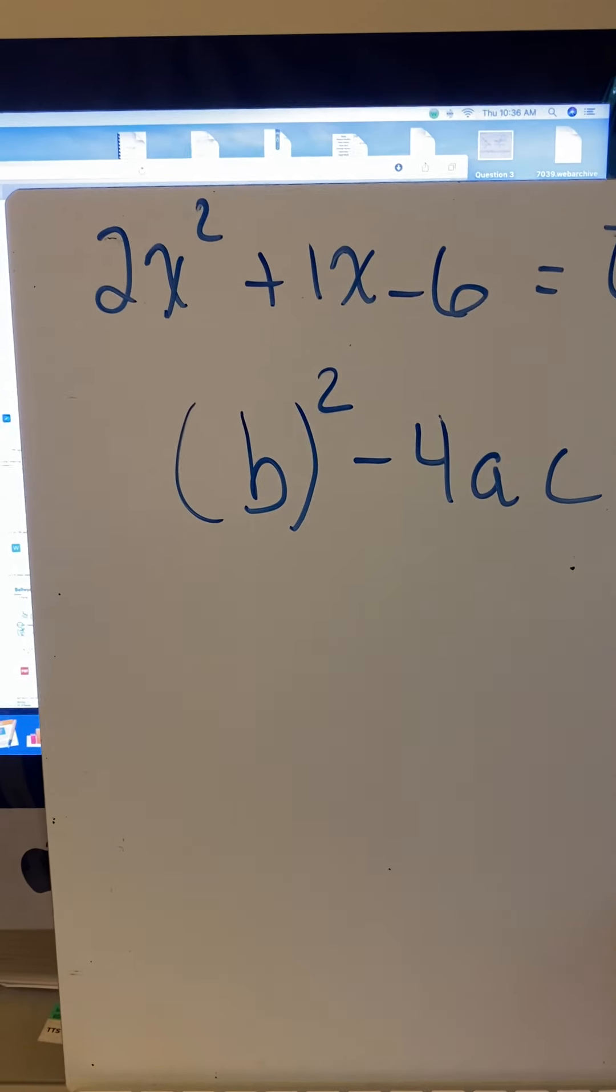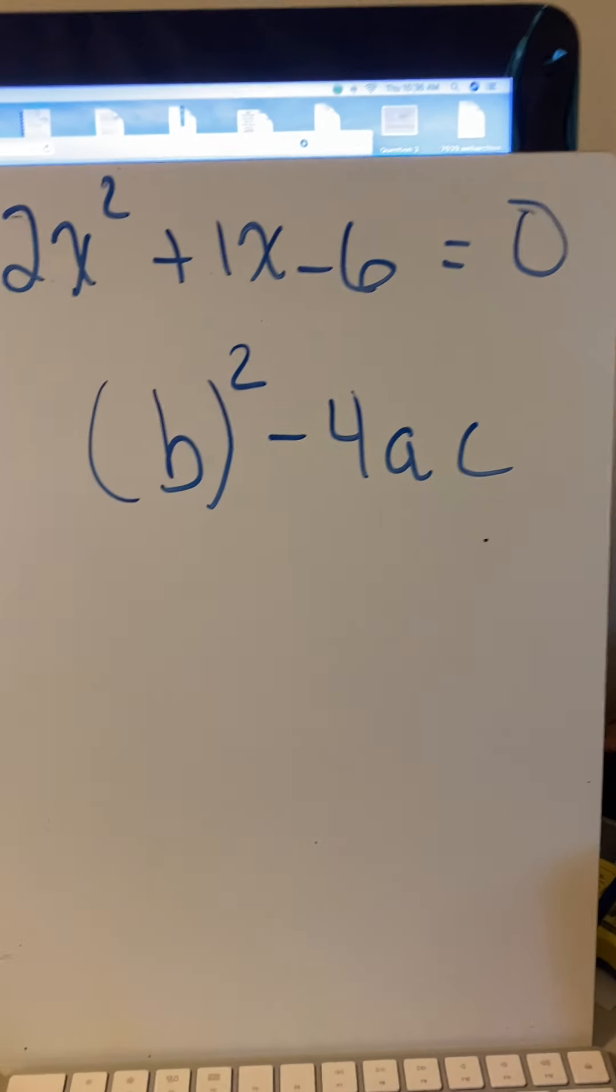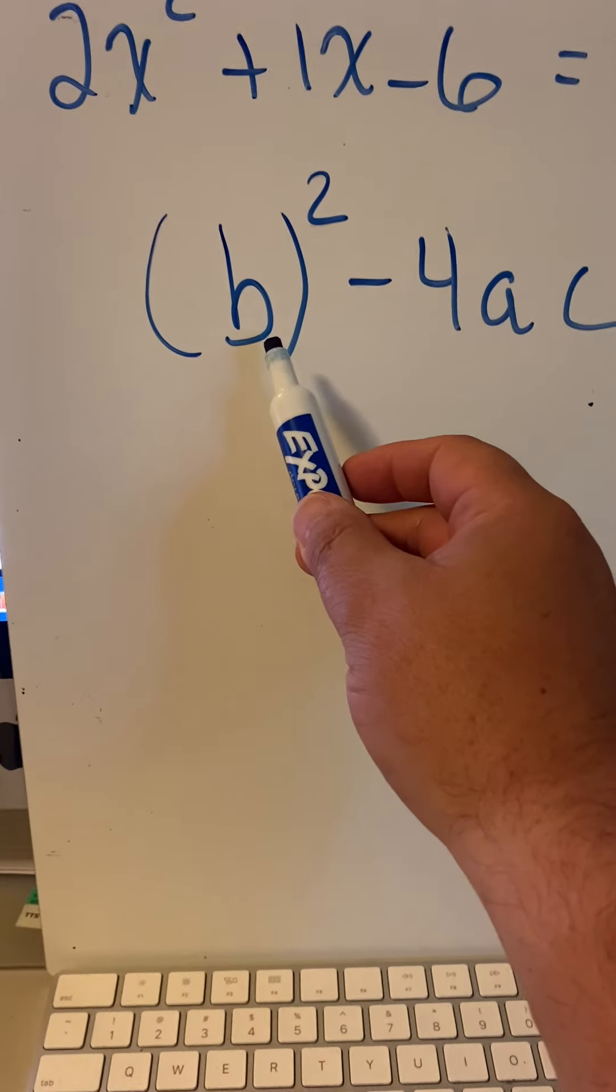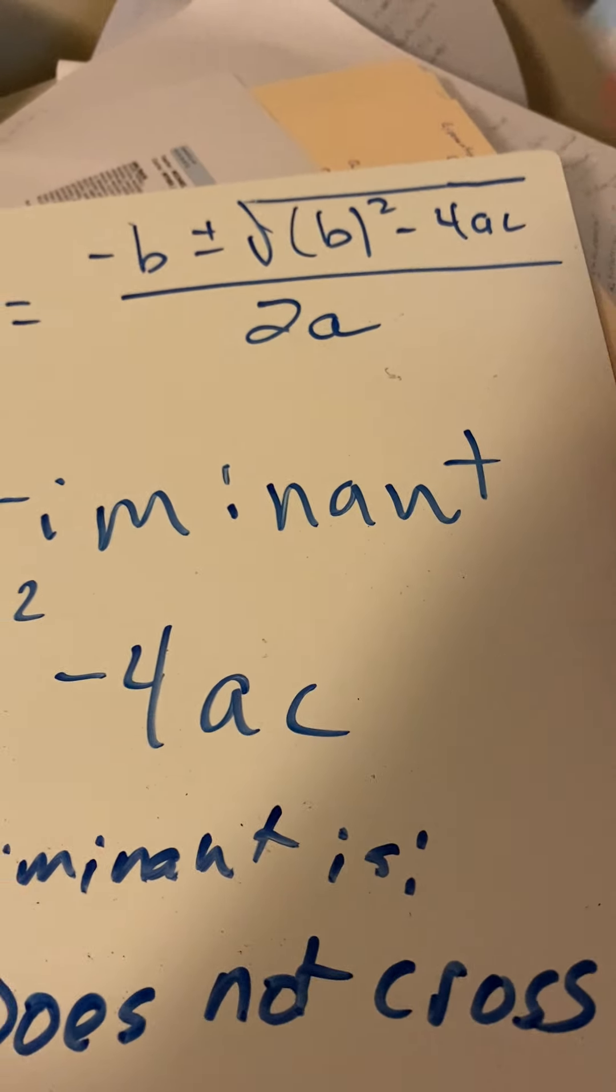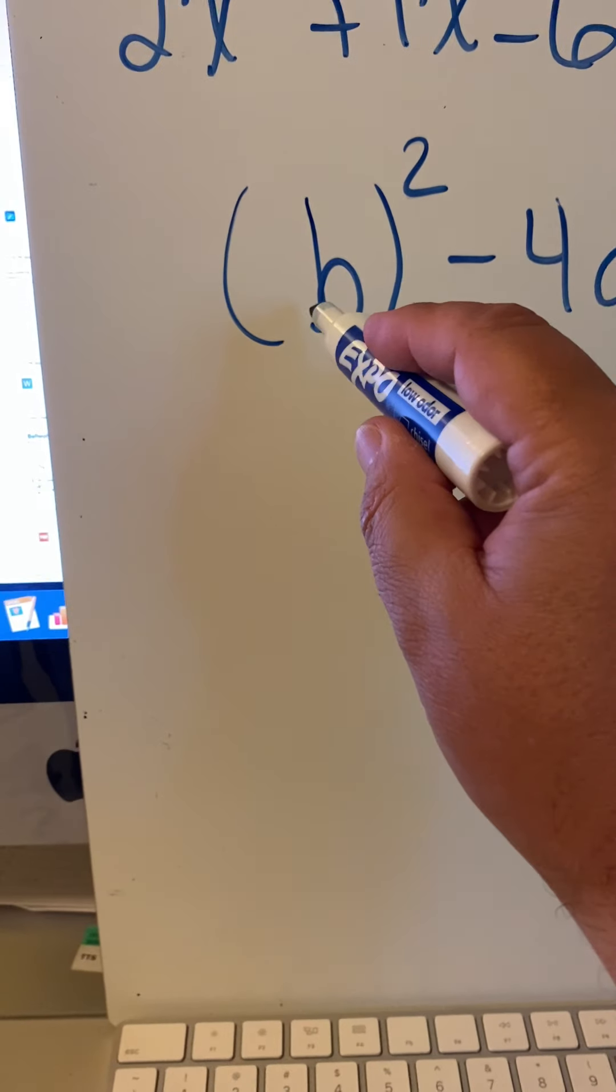Here's our quadratic equation that we've got. 2x squared plus 1x minus 6 is equal to 0. We take the discriminant, which is the work below the radical in the quadratic equation, and we fill in the blanks.